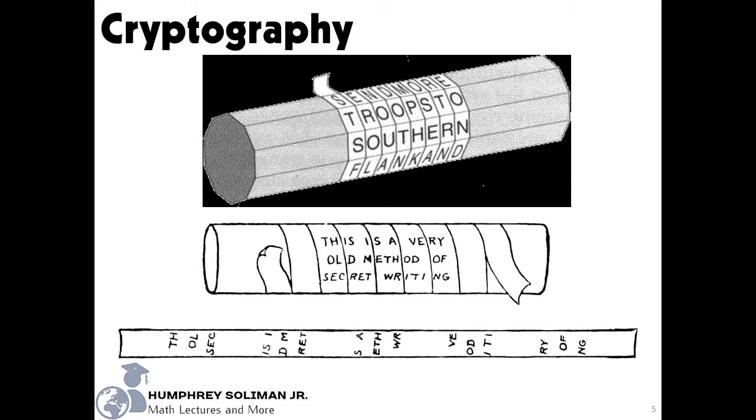The ancient Greeks, and the Spartans in particular, are said to have used this cipher to communicate during military campaigns. The recipient uses a rod of the same diameter on which the parchment is wrapped to read the message.